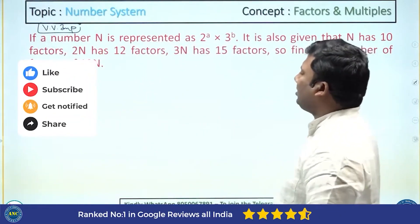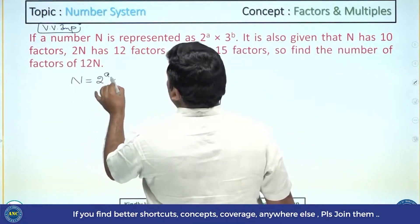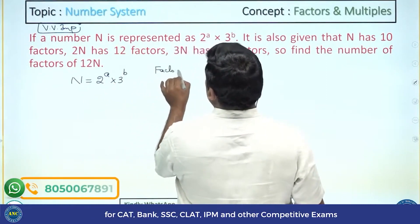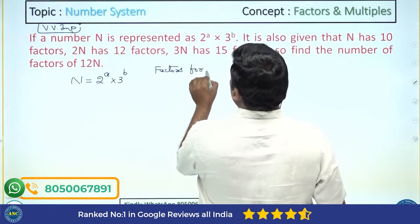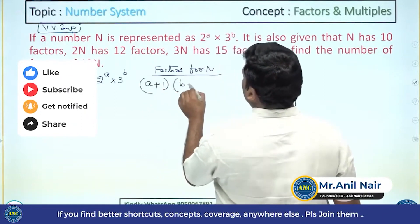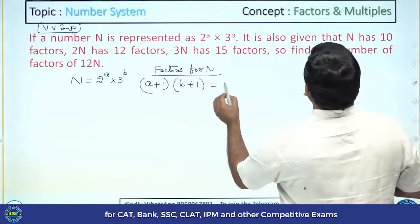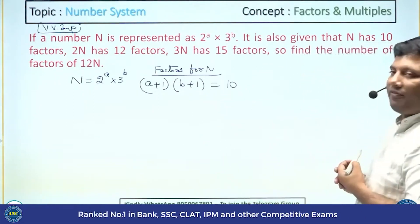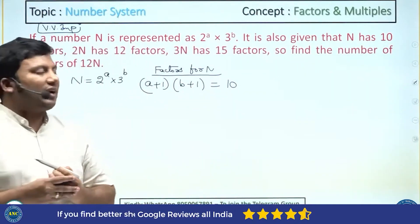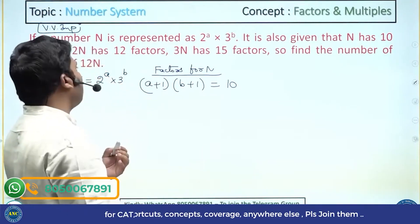If a number N is represented as 2 power A into 3 power B, the factors for N will be determined by the prime numbers: powers of 2 range from 0 to A, giving A plus 1 choices, and powers of 3 range from 0 to B, giving B plus 1 choices. This number has 10 factors, so (A+1)(B+1) = 10.